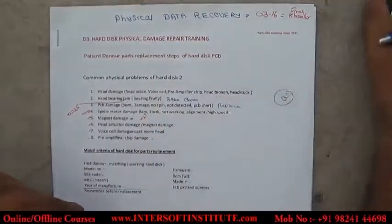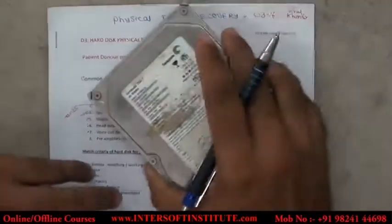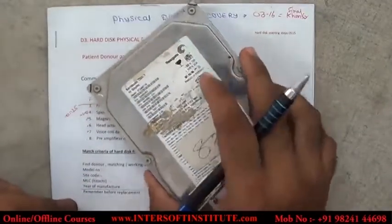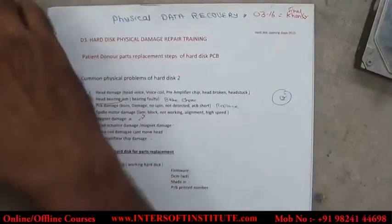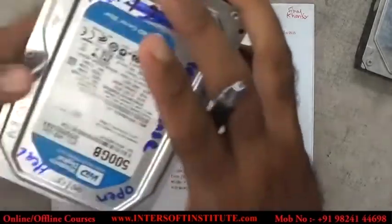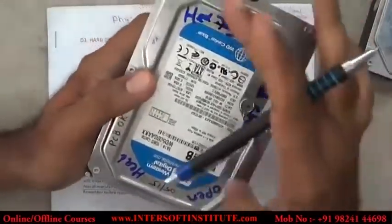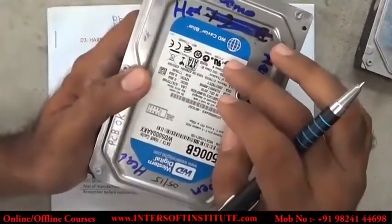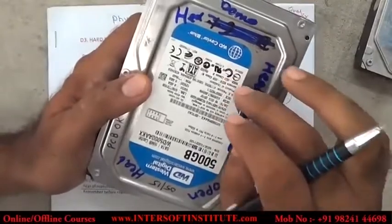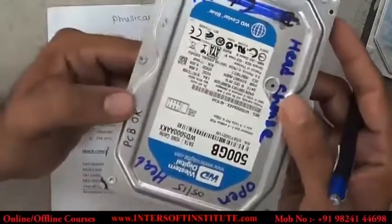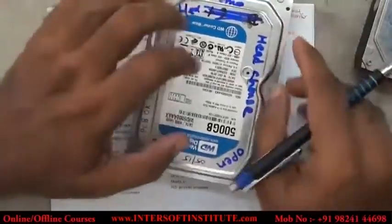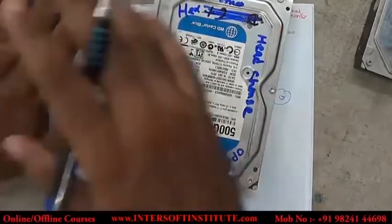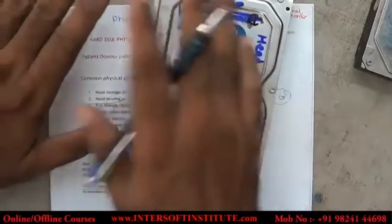Physical means internal parts are damaged. If the head is damaged — it gives 11 beeps and cannot read the data — and the data is very important, then what do we have to do? We have to replace the head. If the magnet is damaged, then we replace the magnet. Whatever is required, we do the replacement.